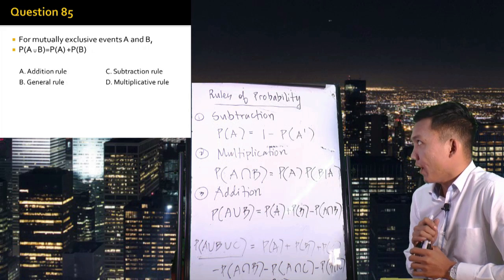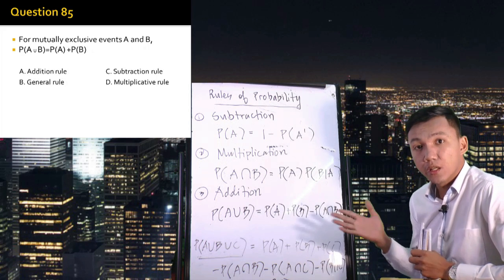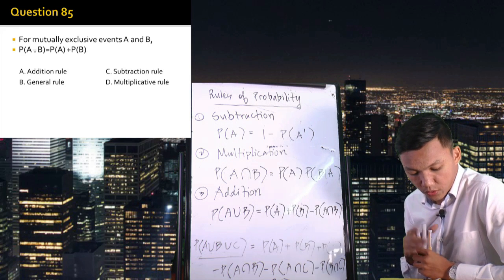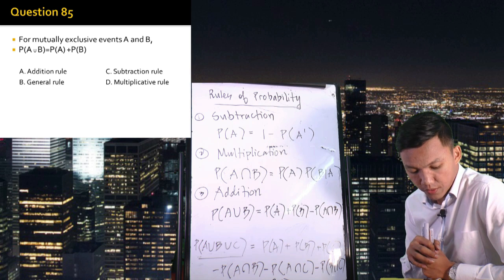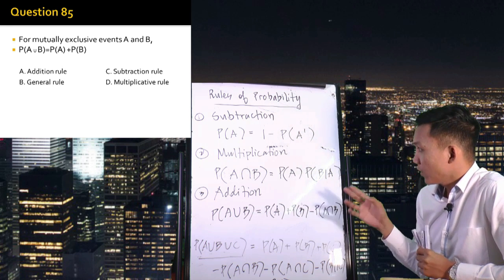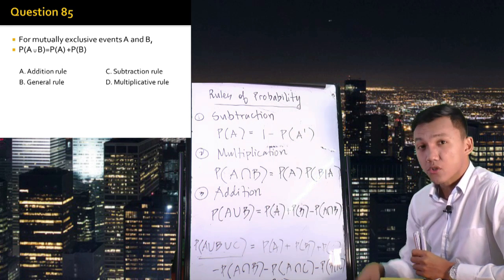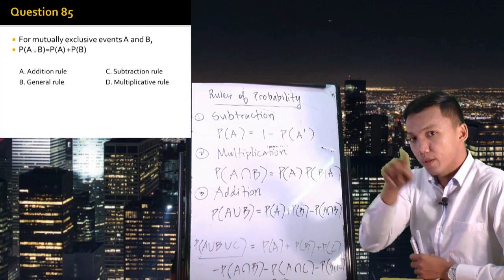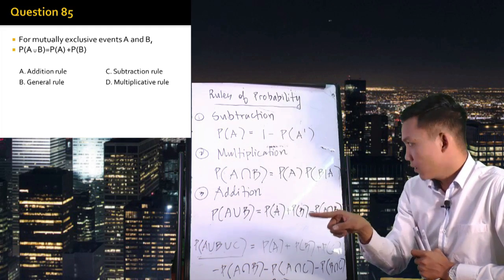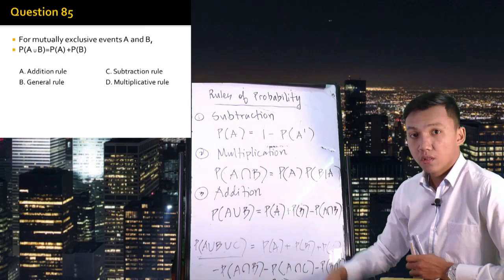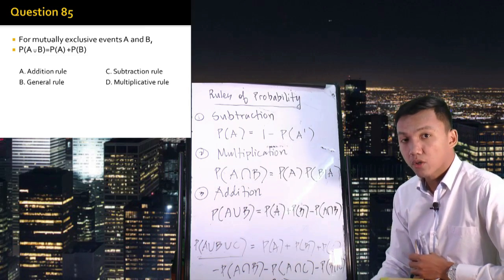Number 85: For mutually exclusive events A and B, P(A∪B) equals the probability of A plus the probability of B. That is still the addition rule. As long as you see a union between sets, it's going to be addition rule. If that is intersection, that is multiplication rule.